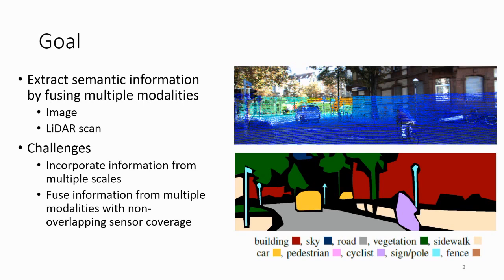The types of semantics we're interested in are buildings, sky, road, as well as object classes such as pedestrians, cyclists, and signs. Some challenges with this problem are that we'd like to incorporate information effectively from multiple scales, and we'd also like to fuse together information from multiple modalities which may have some non-overlapping sensor coverage.